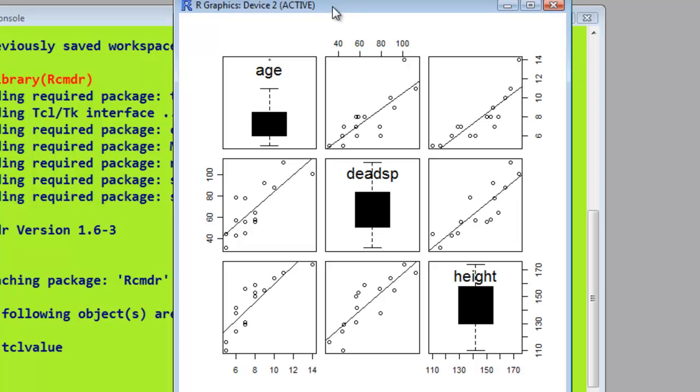Now the results. So if we look here, we've got age, dead space, and height, and they give little box plots of each of the variables. If we look at age and height, we can see that they're very close to the line. It's got a very high correlation there.